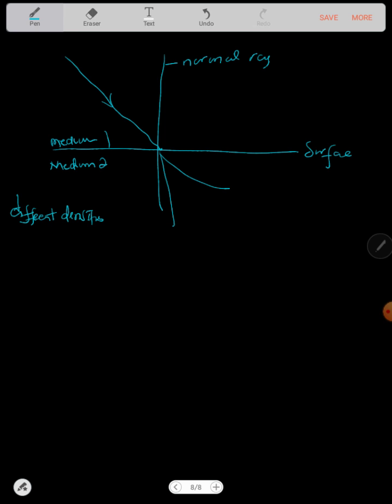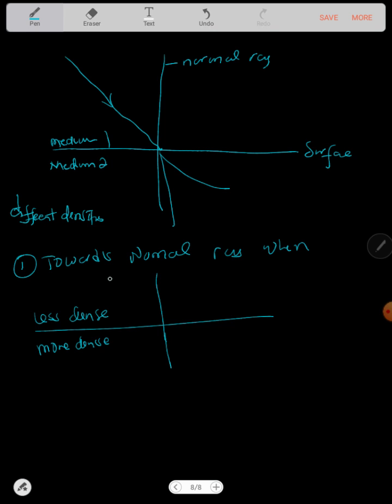But when does light bend towards or away? So light will bend towards the normal ray when this medium is less dense and this one is more dense. So if it's like that, then light will bend towards the normal. And this angle is the angle of incidence and the angle which is formed here is the angle of refraction.